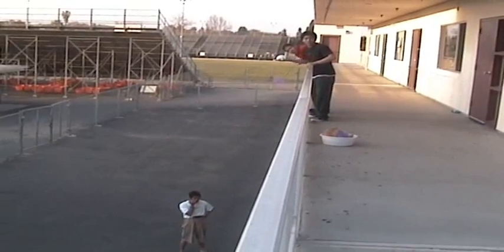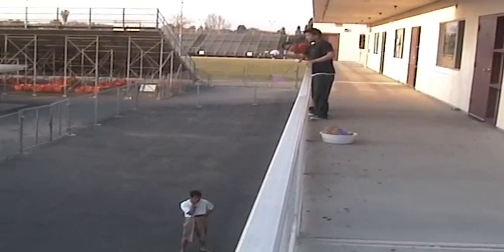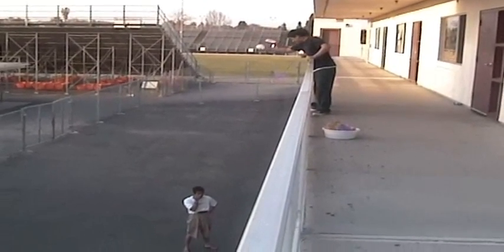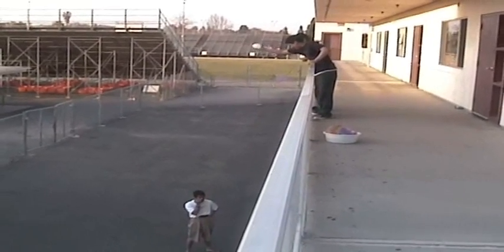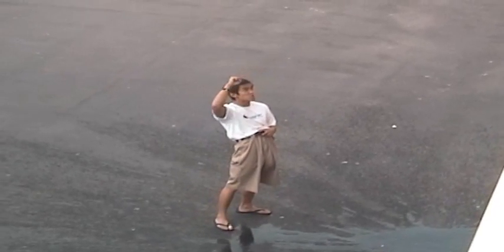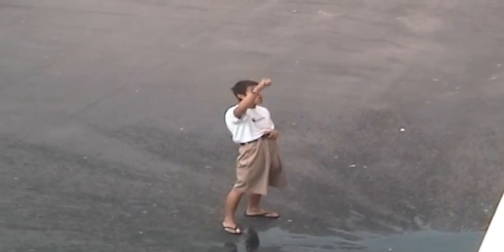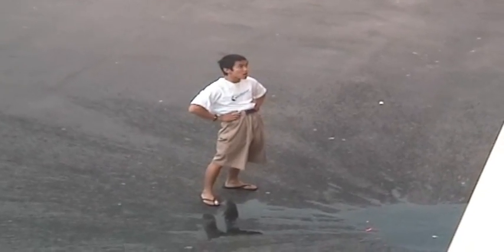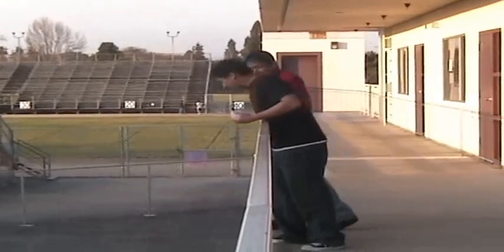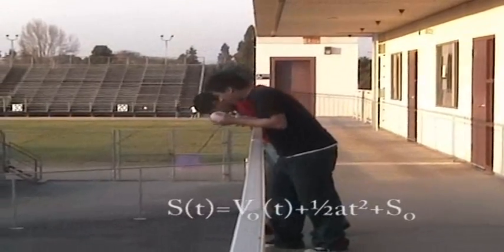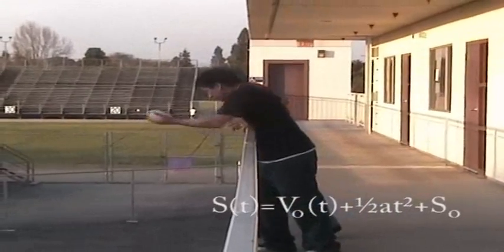We're gonna let gravity do the work, which is negative 32 feet per second squared. Eat this old man! Can you tell us students your positioning formula, which is x equals one half h squared? The position formula is velocity initial times time, plus one half h squared, plus initial height.